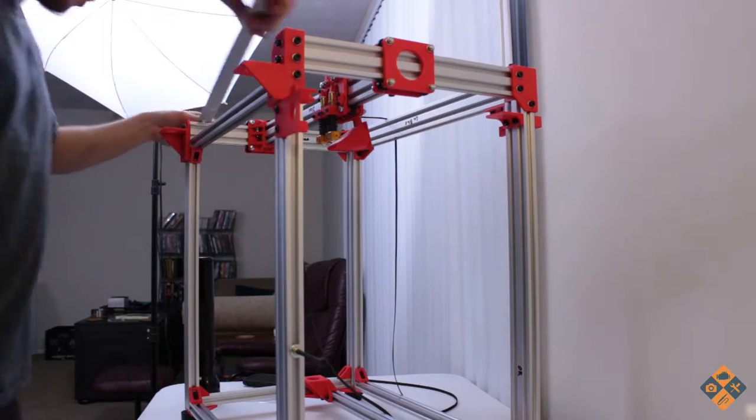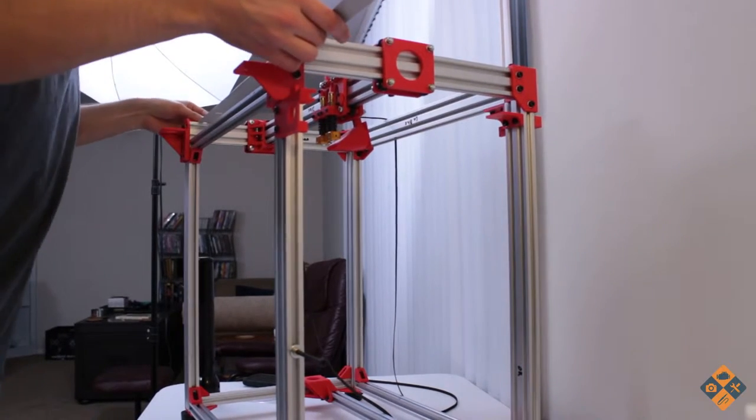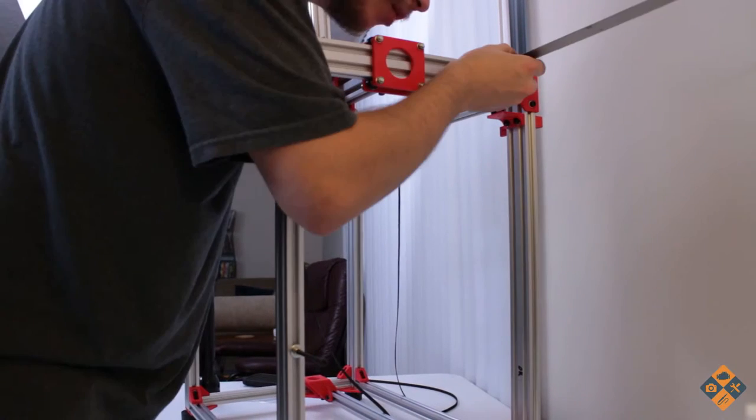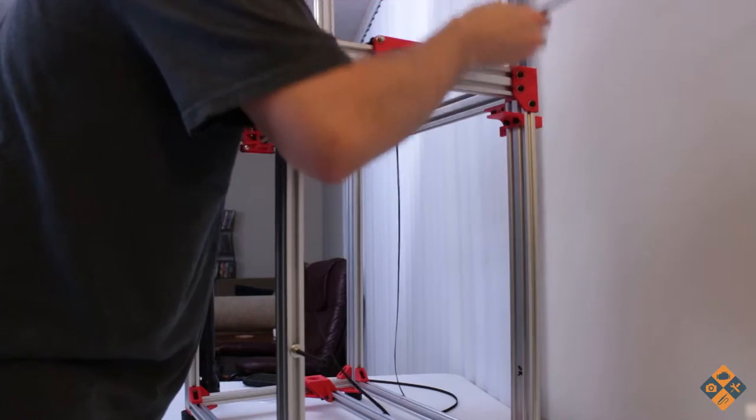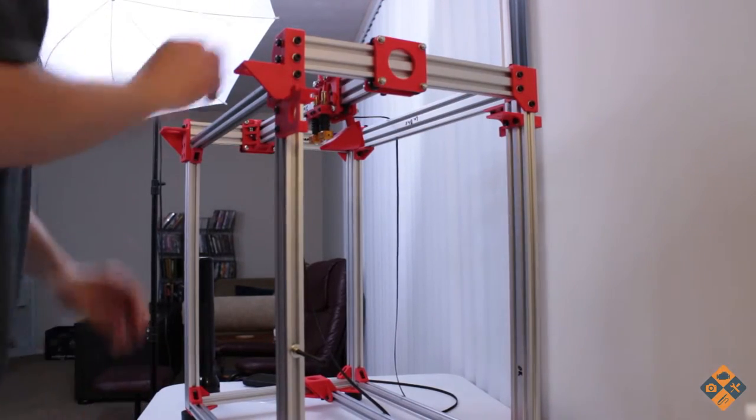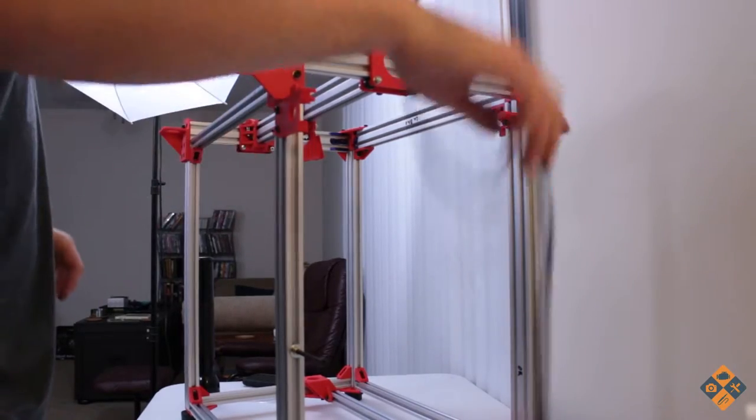So now what I have to do here is just measure up each individual side. Okay so that is at 579. We're at about 578.5 so we're within spec of 0.5. Now we need to disassemble this gantry piece here.